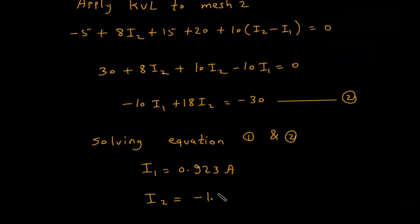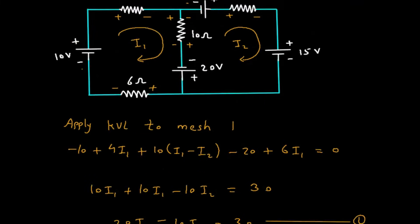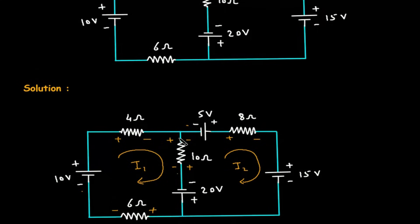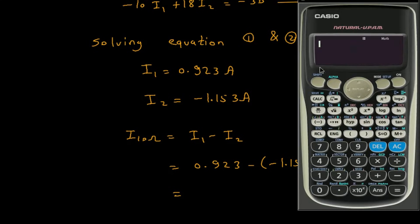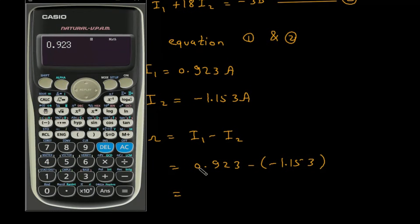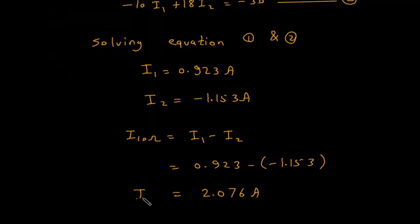We have to find the current through the 10 ohm resistor. Let us call this I_10Ω. According to the directions of I1 and I2, I_10Ω equals I1 minus I2, which is 0.923 minus (minus 1.153), giving 2.076 ampere. This is the required answer.